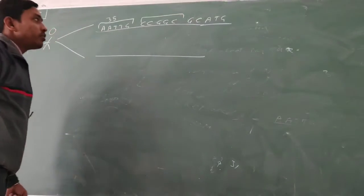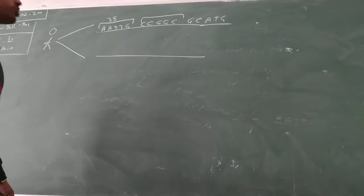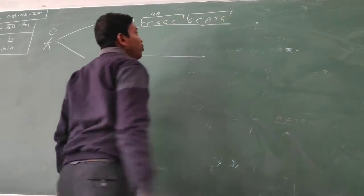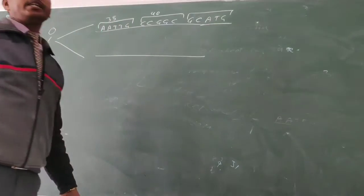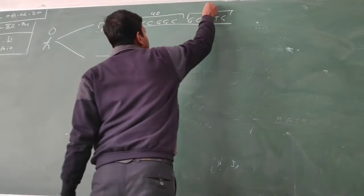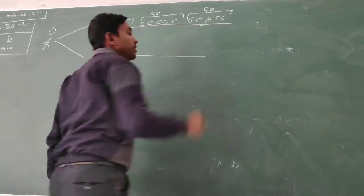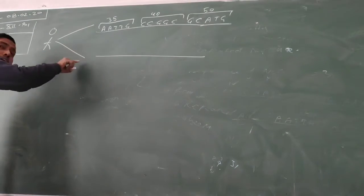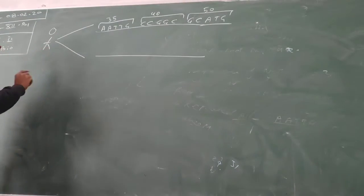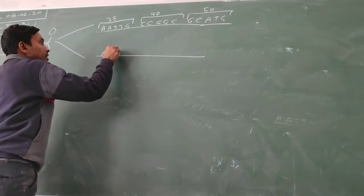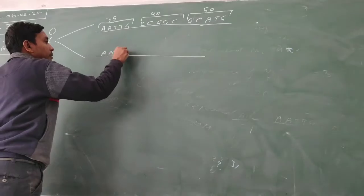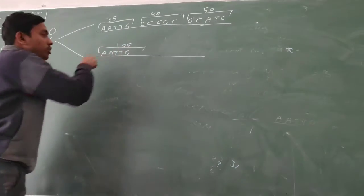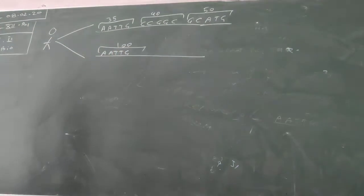Cytosine, cytosine, guanine, guanine, cytosine repeats 30 times. Guanine, cytosine, adenine, thymine, guanine repeats 50 times. In the second strand of the same DNA, adenine, adenine, thymine, thymine, and guanine has a 100 times repeated sequence of the same nitrogenous bases.